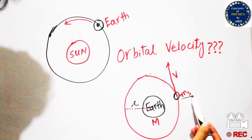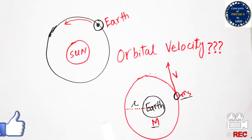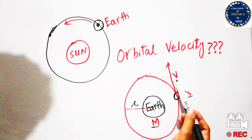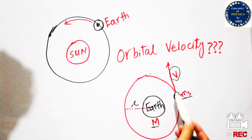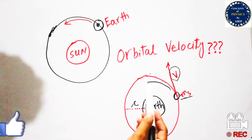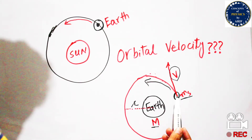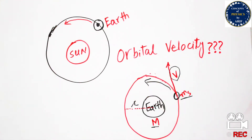Here, m-s is the mass of the satellite and capital M is the mass of the Earth, with radius r. We need to consider the tangential velocity of the satellite around the Earth, and this velocity will be known as orbital velocity.